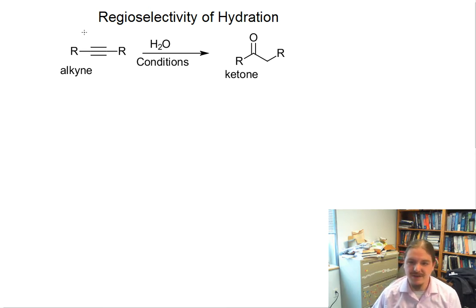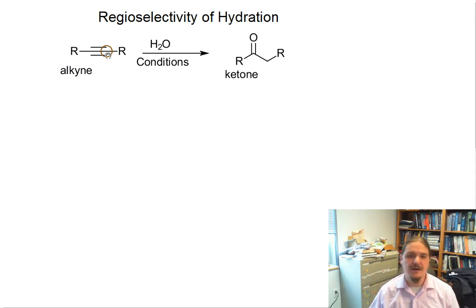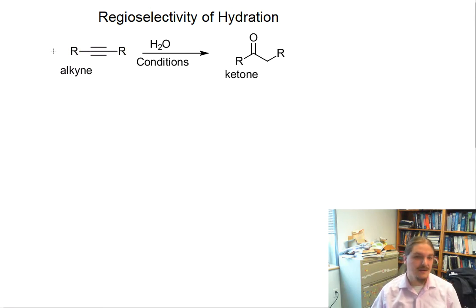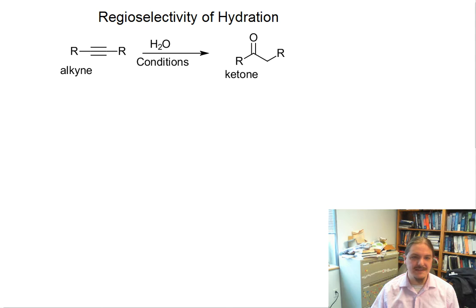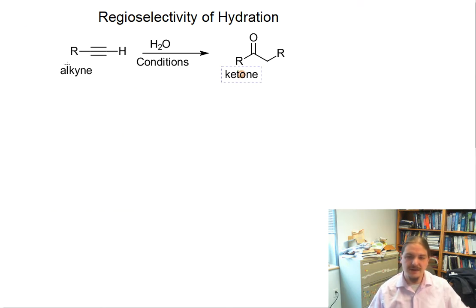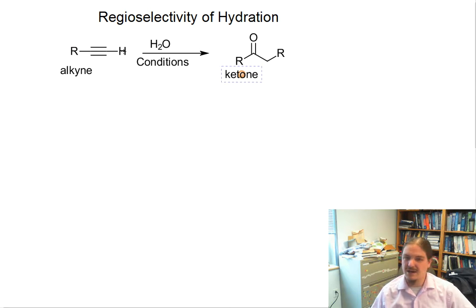I have used a symmetric internal alkyne as my example on purpose. Because once you remove the symmetry of the alkyne, you can get more than one different product — much the same case as with alkenes. So I'm going to change one side of my alkyne to a hydrogen, and now I have a terminal alkyne.